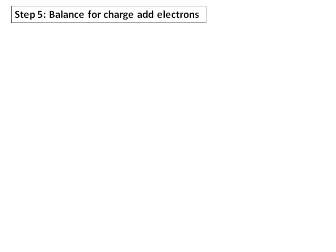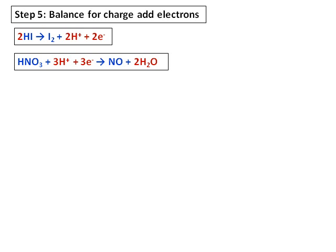Let's proceed to step 5 in which we balance the charge by adding electrons. In the first half reaction, I have added 2 electrons to balance the 2H⁺. In the second half reaction, I added 3 electrons to balance the 3H⁺.